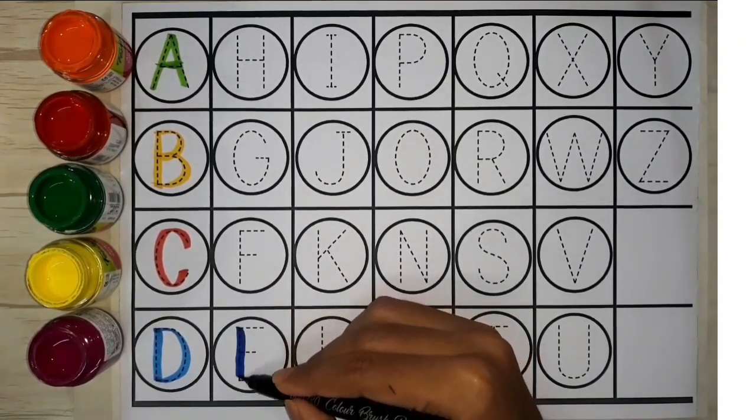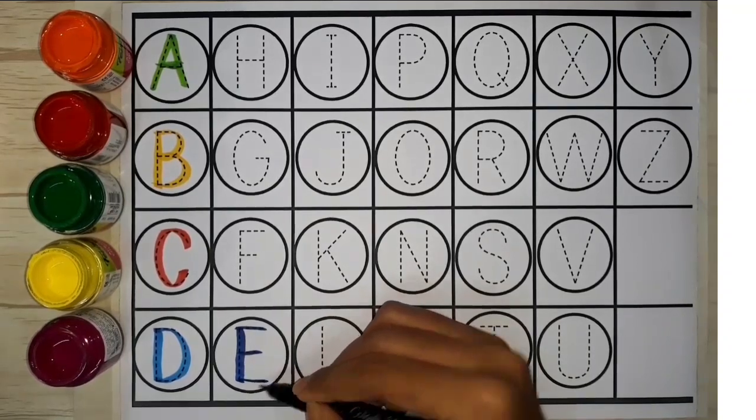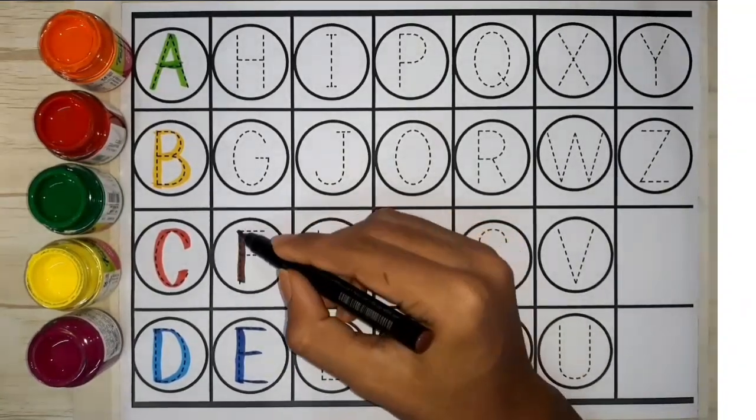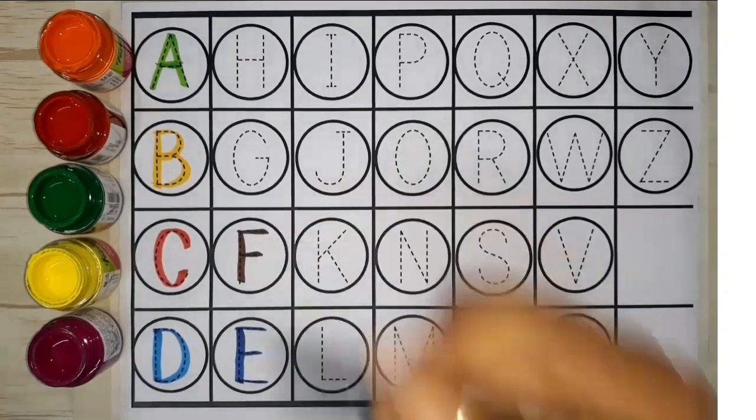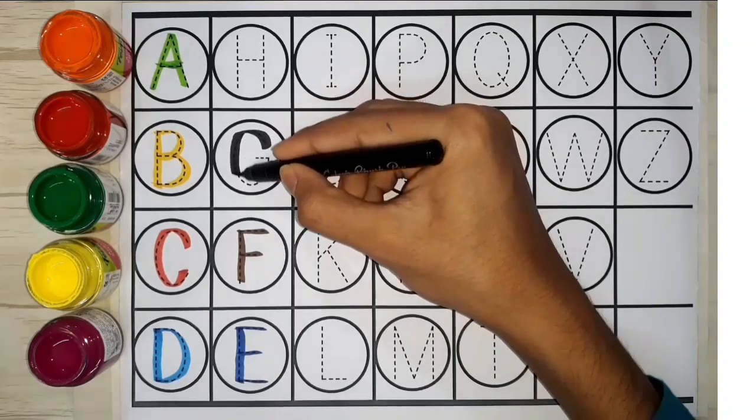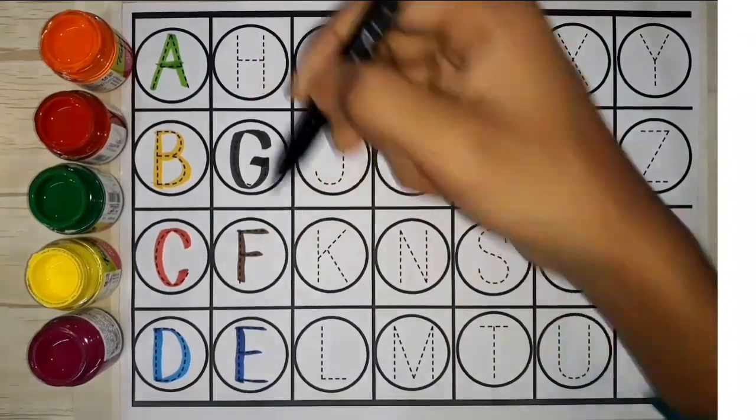E. E for egg. F. F for fish. G. G for goat.